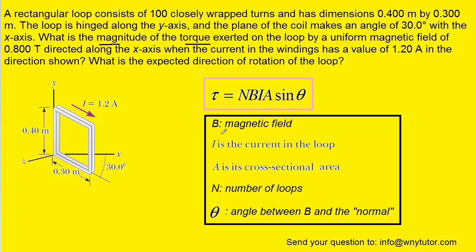Most of the quantities in the formula in this particular question are relatively straightforward because they're stated in the question. For example, B being the magnetic field was stated as having a value of 0.8 tesla. I is the current in the loop and that was stated as being 1.2 amps.